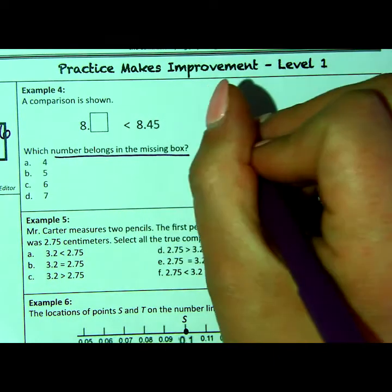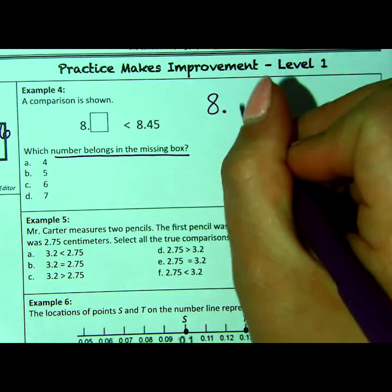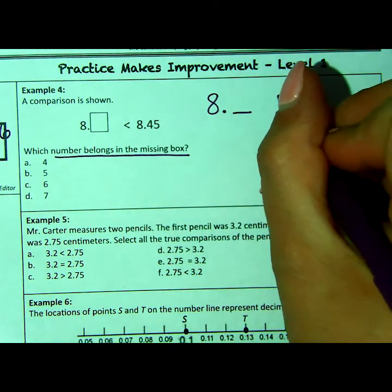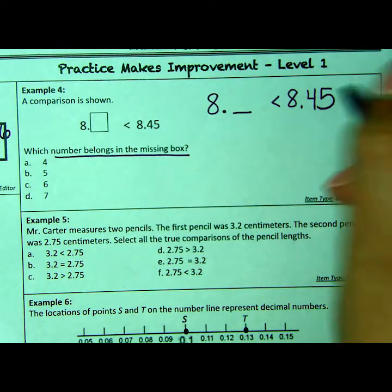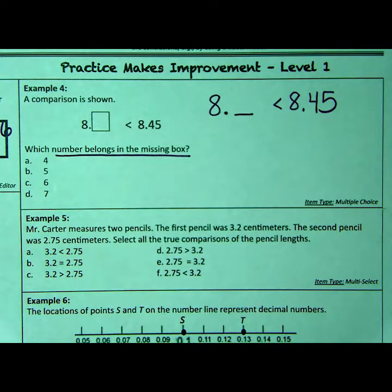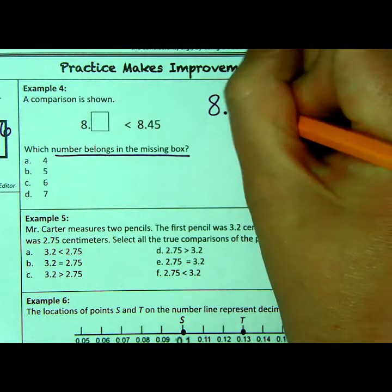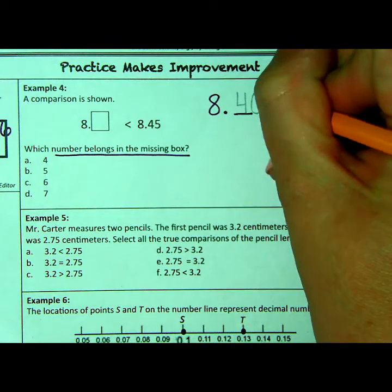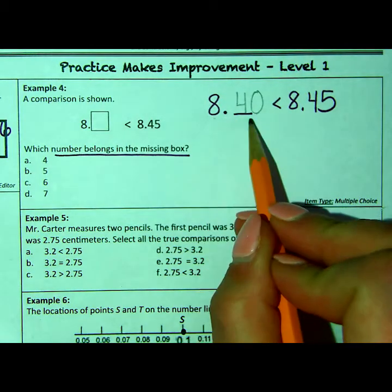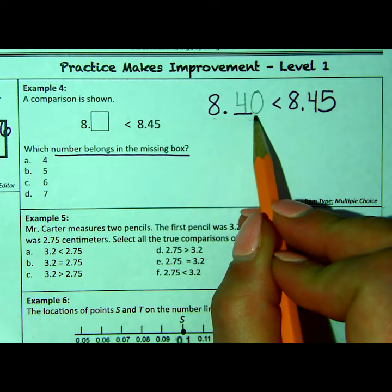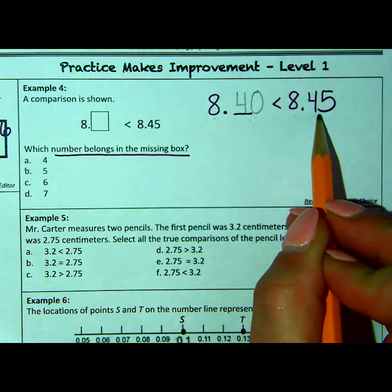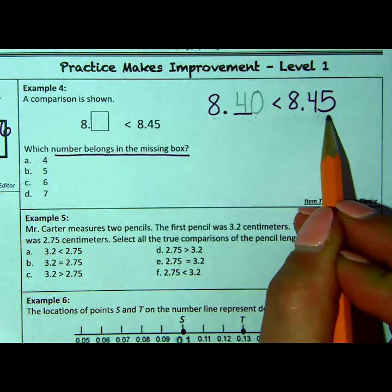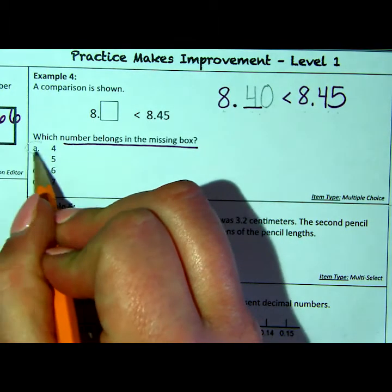So what I like to do is just kind of rewrite this over here to the side and just try plugging in each number. So if I put 8.4, that's equivalent to, I can put the zero there. So 8.40, meaning $8.40 or $8.45. Is this true? 40 is less than 45. So I found the correct answer. It's A.